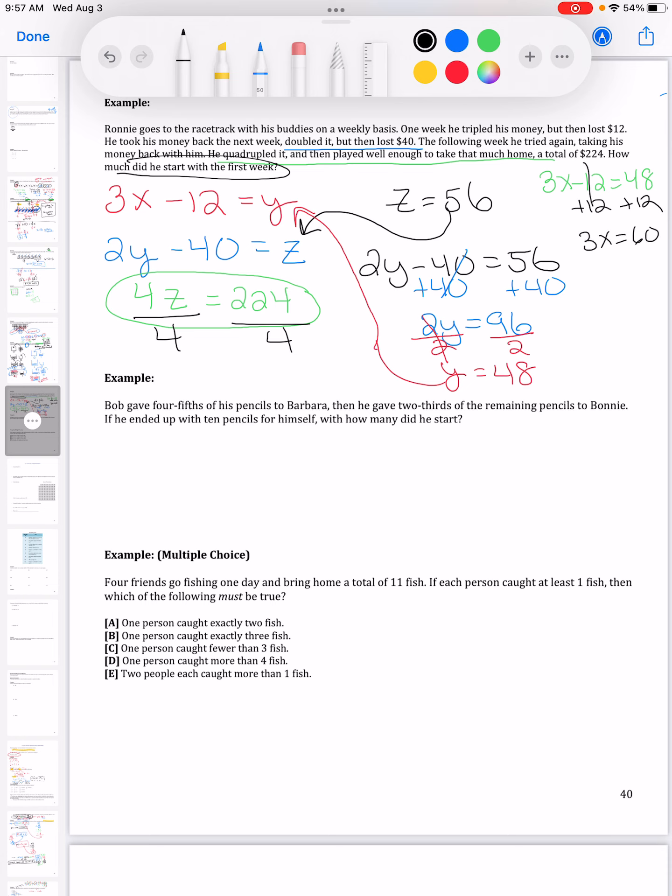I'm going to have to squeeze it in over here. So I get 3x minus 12 is equal to 48, and I can solve for X, which is what I originally wanted, was how much we started the first week with. So I'm going to add 12 to both sides.